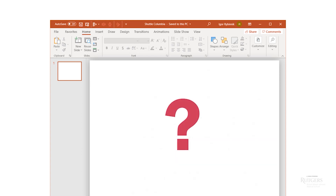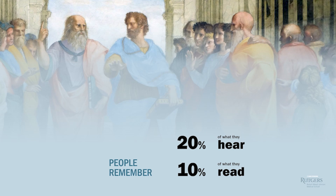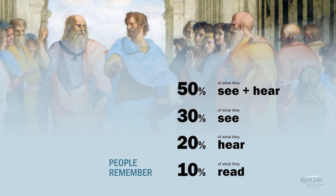Then why do we keep using slideware like PowerPoint when teaching the sciences? Nearly 60 years of cognitive research tells us that people remember only 10% of what they read, 20% of what they hear — turns out we're social creatures who like stories — 30% of what they see, and 50% of what they see and hear. As learning becomes more active, people remember 70% of what they say, and most of what they say and do.